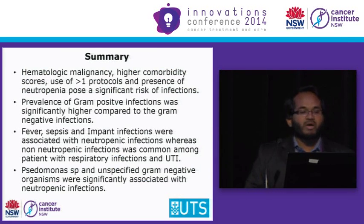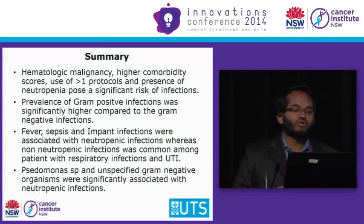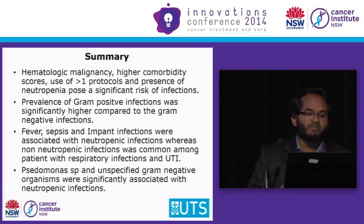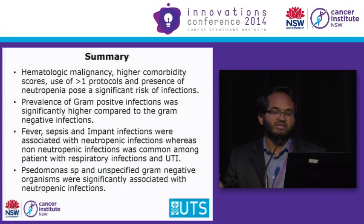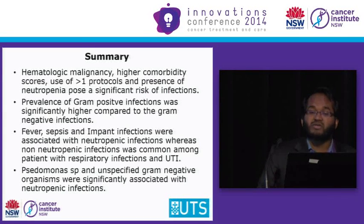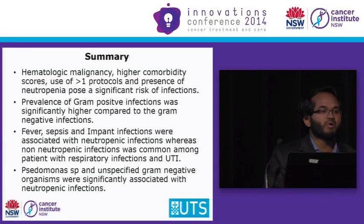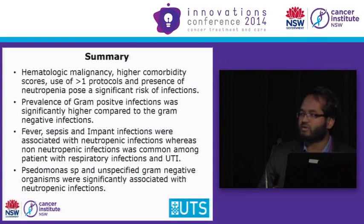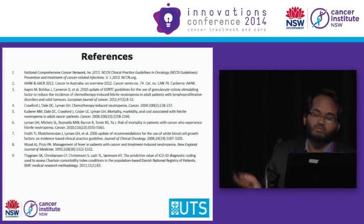In summary, hematological malignancy, higher comorbidity scores, use of more than one protocol, and presence of neutropenia pose significant risk of infections. The prevalence of gram-positive infections was significantly higher than gram-negative infections among the study populations. Fever, sepsis, and implant infections were associated with neutropenic infections, whereas non-neutropenic infections were common among patients with respiratory infections and urinary tract infections. Pseudomonas and unspecified gram-negative organisms are also significantly associated with neutropenic infections. Thank you — and these are some references.